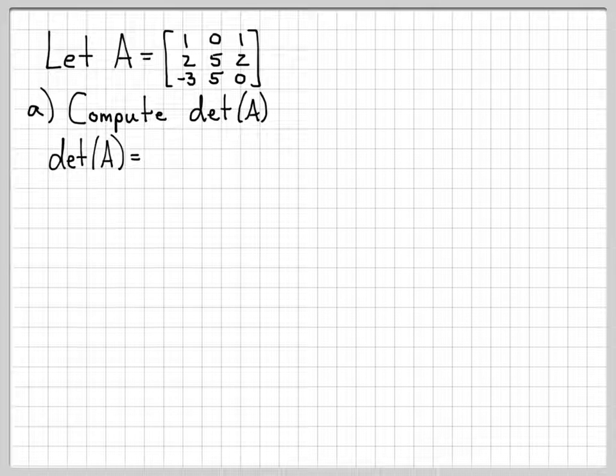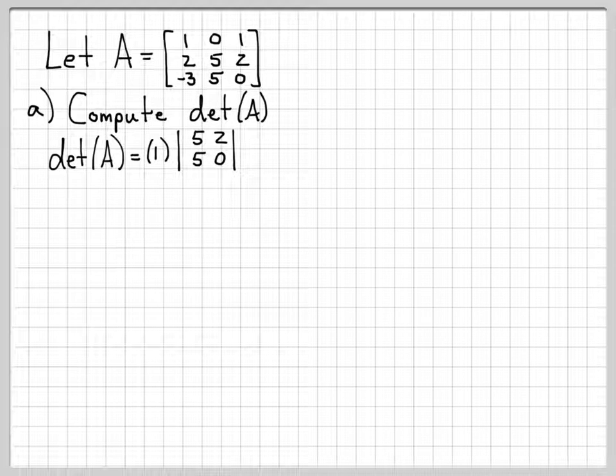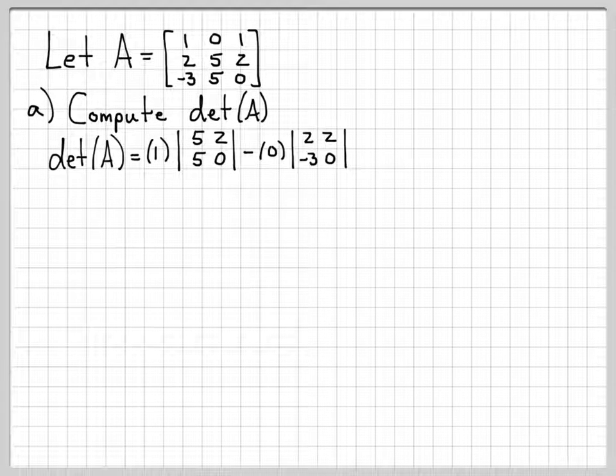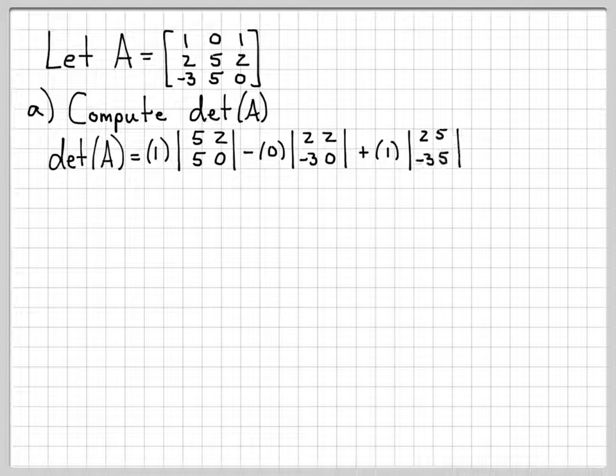So the determinant of A I can compute as 1 times the determinant of [5, 2; 5, 0] minus 0 times the determinant of this 2 by 2 matrix plus 1 times the determinant of the matrix [2, 5; -3, 5]. So this is just standard cofactor expansion about that first row. If you don't remember how to do basic determinant computations, go back a few videos to check that out. But this is pretty straightforward once you know how to do it.